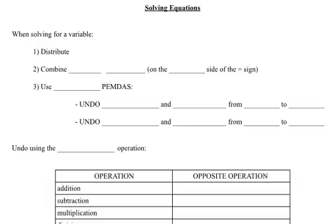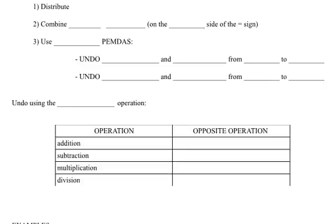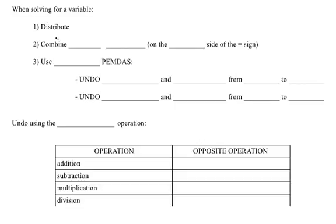In this lesson we're going to talk about solving equations. When you need to solve an equation, the first thing you have to do is distribute. The next thing you're going to do is combine like terms on the same side of the equal sign. We'll talk about what that means in just a minute.